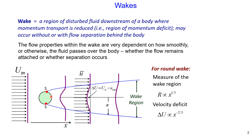Experiments show that the size of the wake region r grows with downstream distance, and the velocity deficit is proportional to x to the power of minus two-thirds. Therefore, with increasing x, the velocity deficit is reducing.